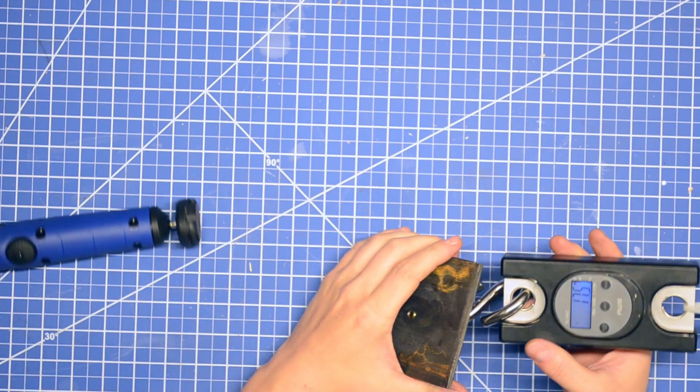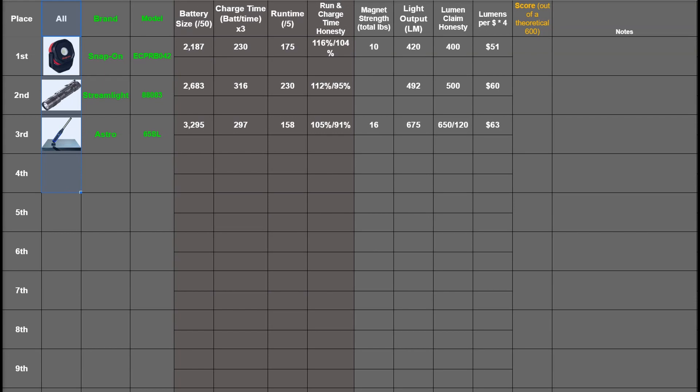So onto the rank list to see how these three lights stack up. For now all three lights are on the same list but obviously we'll be doing future episodes as head to heads between multiple lights of the same category. Here we have the image, brand and model numbers. Battery size is first up, actual measured battery size not what's advertised. That gets turned into points by dividing by 50, so that's 43.7 for the Snap-on, then 53.7 and 64.